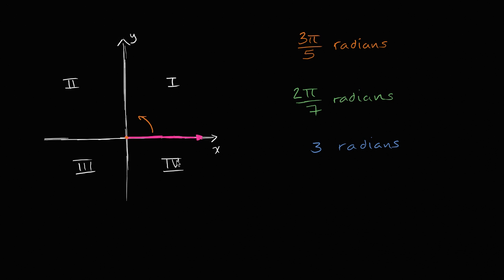So assume you paused the video and you tried it out on your own. So let's try this first one, three pi over five. So we're going to start rotating. So if we go straight up, if we rotate it essentially, if we want to think in degrees, if you rotate it counterclockwise 90 degrees, that is going to get us to pi over two. So that would have been a counterclockwise rotation of pi over two radians.